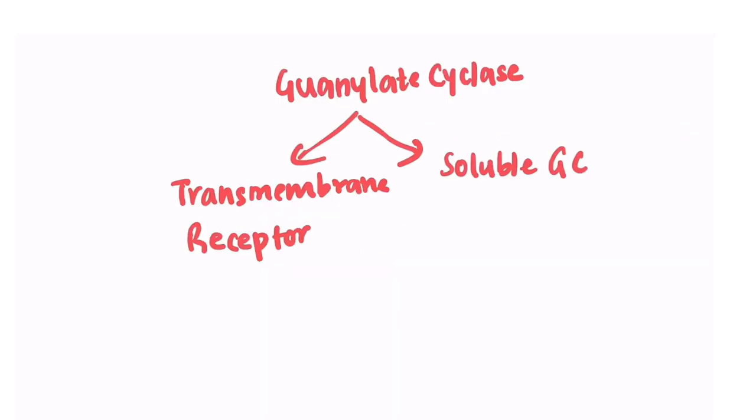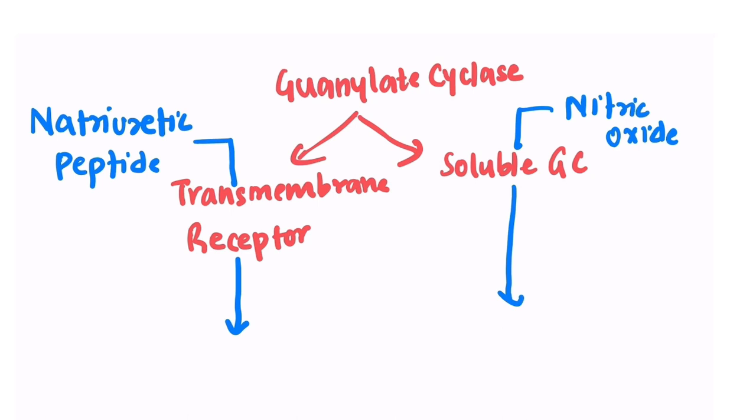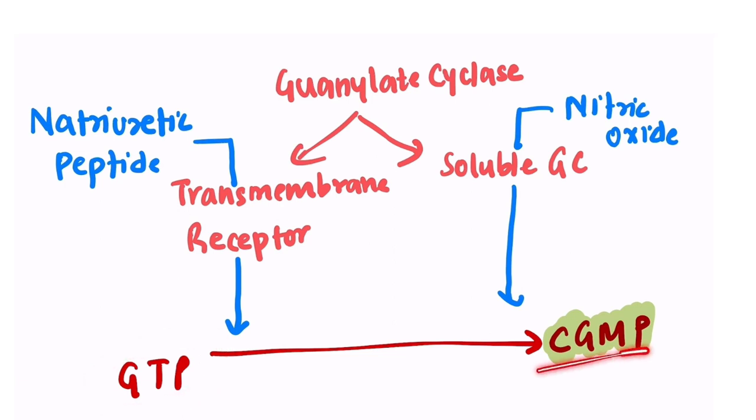Now, along with cyclic GMP, we also should know about guanylate cyclase receptor. It exists in two forms: transmembrane receptor and soluble guanylate cyclase receptor. The natriuretic peptide acts via this transmembrane receptor, and nitric oxide acts via this soluble guanylate cyclase receptor. And both of them convert GTP to cyclic GMP.